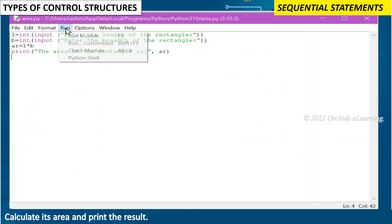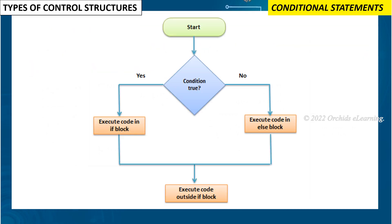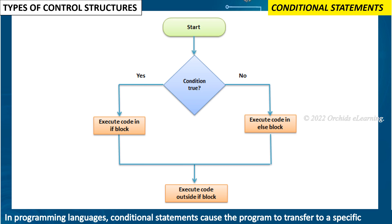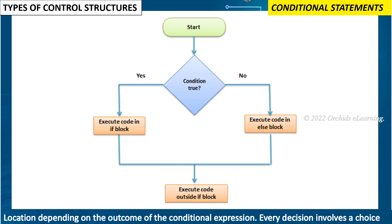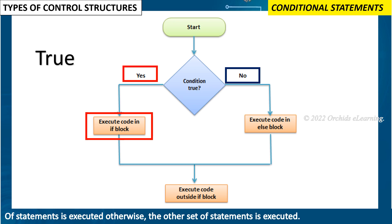In conditional statements, the program transfers to a specific location depending on the outcome of the conditional expression. Every decision involves a choice between two alternatives — yes and no. If a conditional statement is true, then one set of statements is executed; otherwise, the other set of statements is executed.